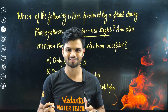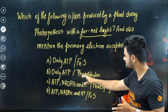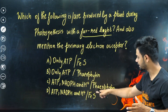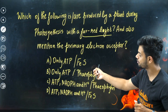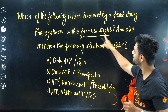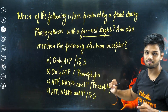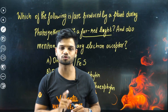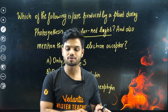The options are: only ATP, FES as the electron acceptor, and other products. You need to tell which are the products of the light reaction under far-red light, and also identify the primary electron acceptor. I want you to pause the video right now and try answering this question before I give you the solution.